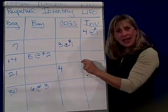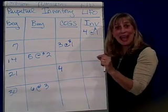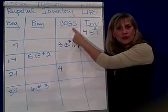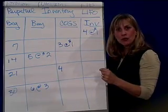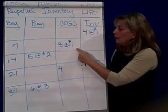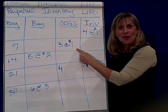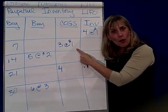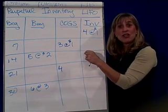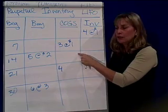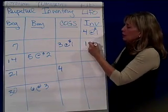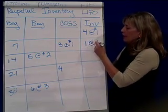The second entry is debit cost of goods sold and credit inventory for the cost. What did it cost? $3. So I'll debit cost of goods sold $3 and credit inventory $3. So what's left in inventory? One unit at $1.